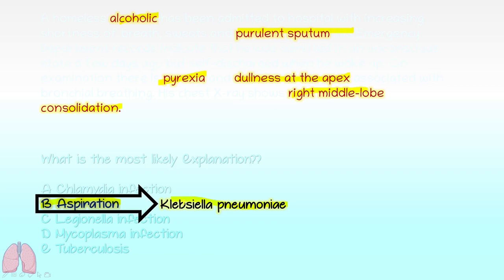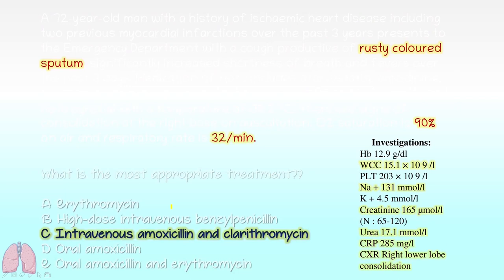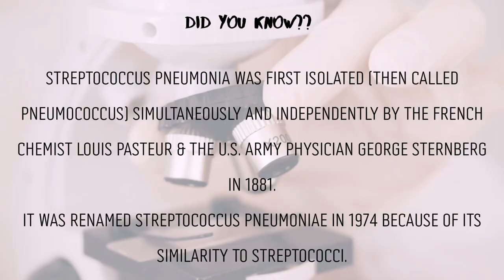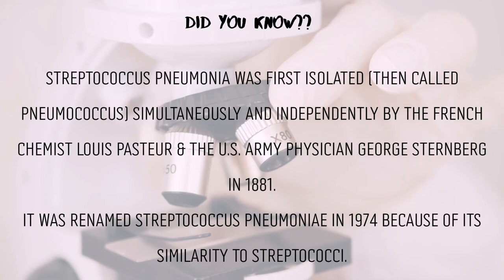Moving to the next MCQ — a large question, so take your time reading it. The answer is intravenous amoxicillin and clarithromycin, which is what you would use to treat community-acquired pneumonia. The causative organism here is Streptococcus pneumonia.